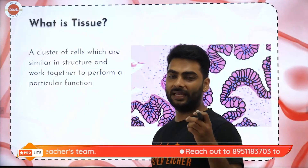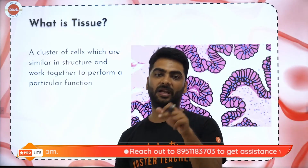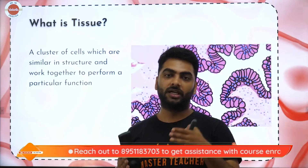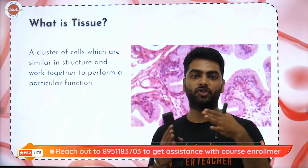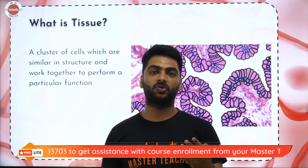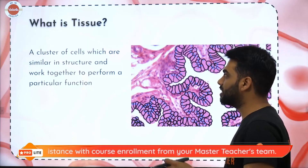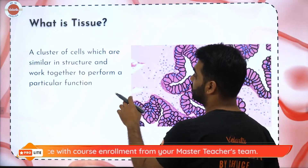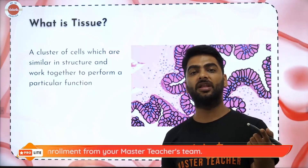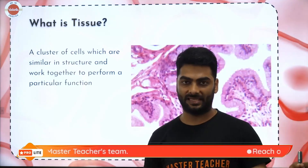What is a tissue? Basically, as you know, every organism is made up of cells. Cells combine to form tissues, tissues combine to form organs, organs combine to form organ systems, and all the organ systems together make the organism. A tissue is a cluster of cells which have similar structure and they perform a similar function because all of them are made of the same kind of cells.